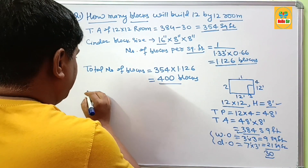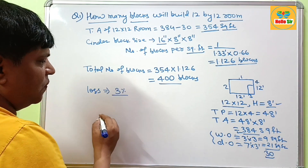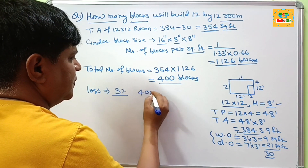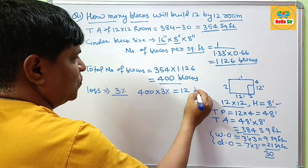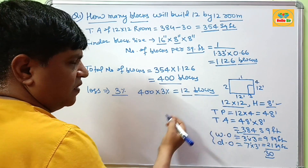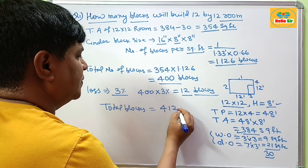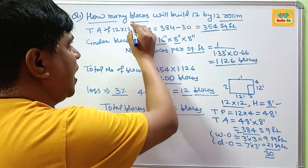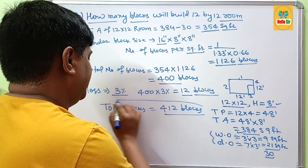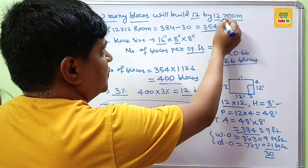Some blocks may be damaged during construction, so we account for a 3% loss. Three percent of 400 blocks equals about 12 blocks. Adding that, the total blocks needed is 400 plus 12, which equals 412 blocks. So to answer the question: you will need approximately 412 cinder blocks to build a 12x12 room.